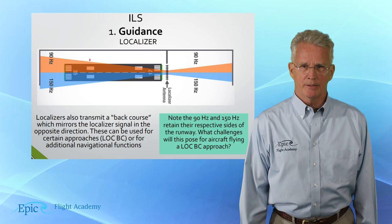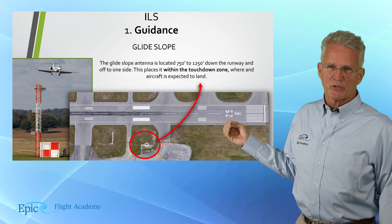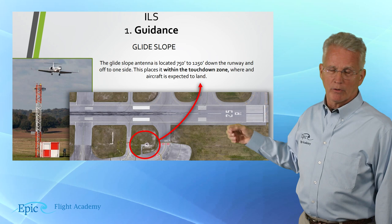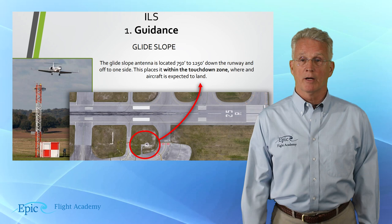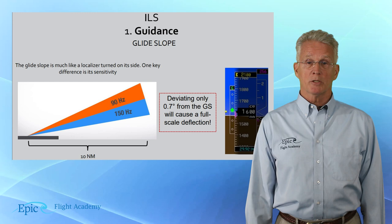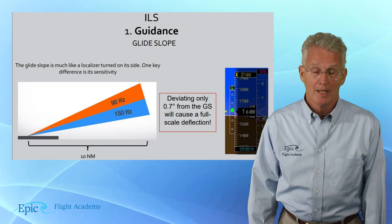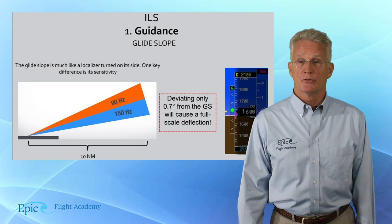The other part of guidance is the vertical or glide slope guidance. In this picture you can see that the glide slope antenna is located anywhere from 750 to 1,250 feet down the runway and off to the side — that red and white box with that vertical red and white antenna is what it looks like. This places the glide slope antenna within the touchdown zone. The glide slope is very much like a localizer but turned on its side, and it is much more sensitive, deviating only 0.7 degrees, causing a full-scale glide slope deflection.